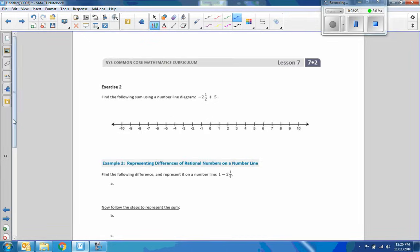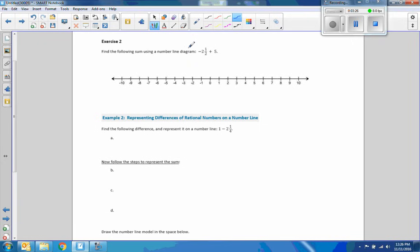Exercise two. Find the following sum using a number-line diagram. Negative two-and-a-half plus five. So, we're going to start at negative two-and-a-half, which is right here. Halfway between negative two and negative three. And we're going to go to the right. One, two, three, four. Five. So, we should be going this direction. Halfway between two and three.